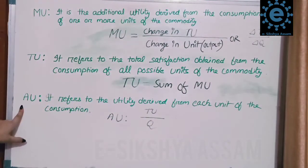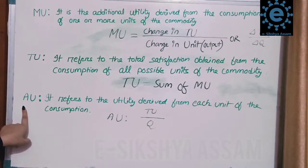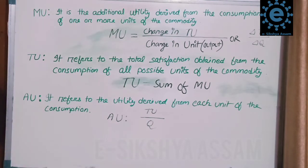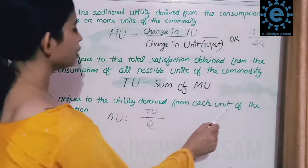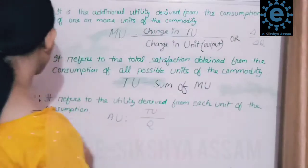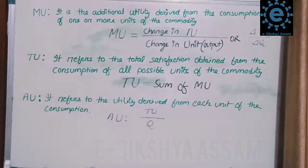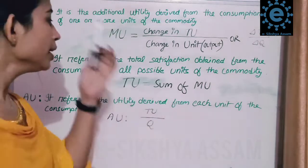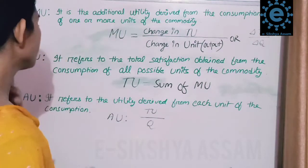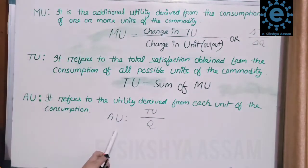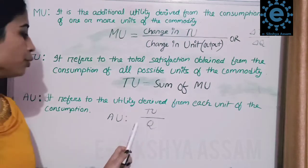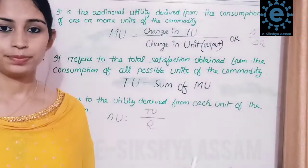Next is average utility. Average utility refers to the utility derived from each unit of consumption. The formula for average utility is: AU equals total utility (TU) divided by quantity (Q).